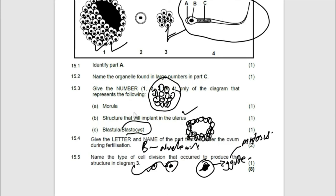The blastula forms an outer layer called the chorion, and that outer layer forms finger-like projections called chorionic villi for implantation to take place. The process that results in the multiplication of these cells is called mitosis.